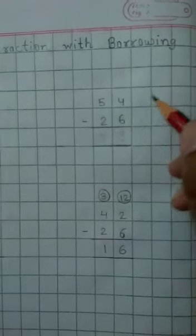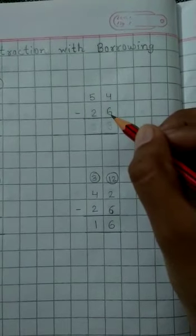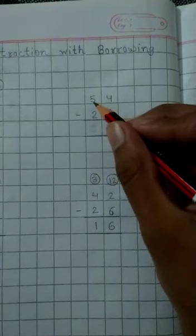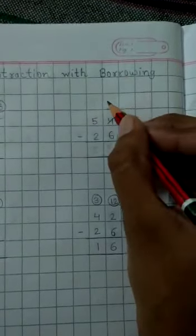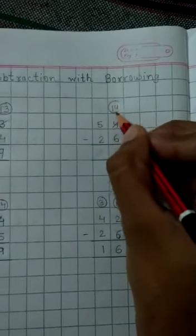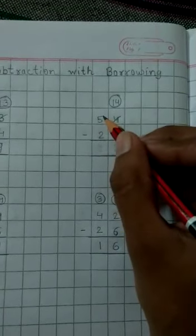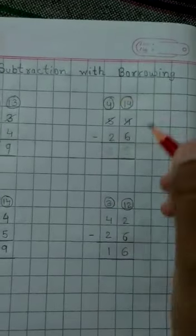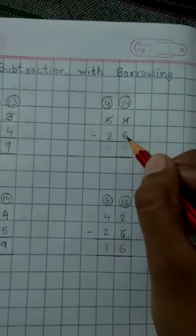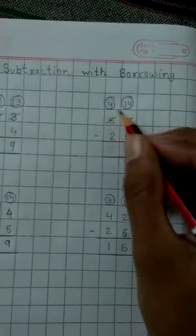The same we will be doing here. 4 is a smaller value as compared to 6, so 4 will take 1 borrow from 5. So 4 will become 14. Now as 5 has given 1 value to 4, then 5 will reduce and it will become 4. So now here we will subtract 6 from 14 and we will subtract 2 from 4.